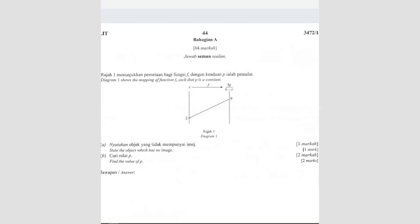Alright, question number 1. Diagram 1 shows the mapping of a function f such that p is a constant. They gave you this function here which you can see.